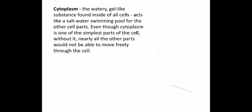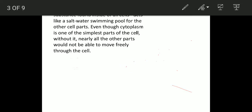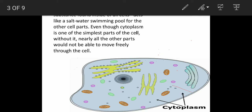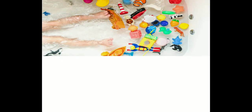What is the function of cytoplasm? The cytoplasm acts like a salt water swimming pool for the other cell parts. Even though cytoplasm is one of the simplest parts of the cell, without it nearly all the other parts would not be able to move freely through the cell. You can see the endoplasmic reticulum, Golgi body, and mitochondria — so many organelles are present in the cytoplasm.